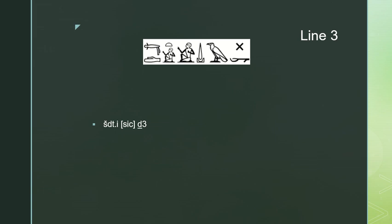There is a typo in the manuscript here — it should be the arm hieroglyph, not the seated man, from the shadit. This was a learning text, and I have some mixed feelings about the grammatical correctness of one of the forms here.